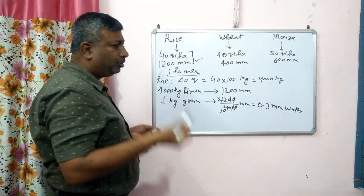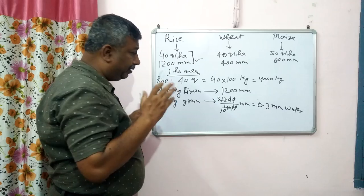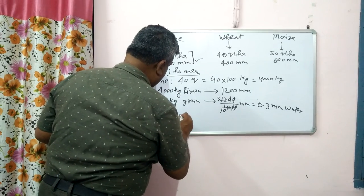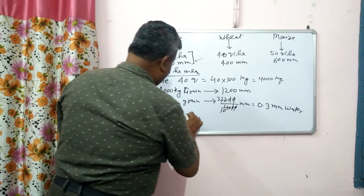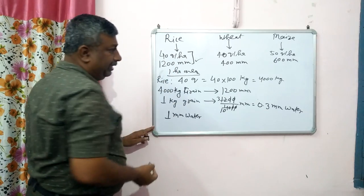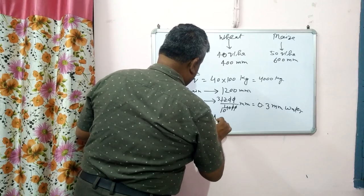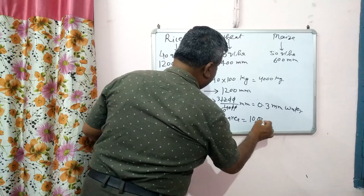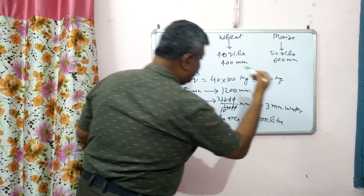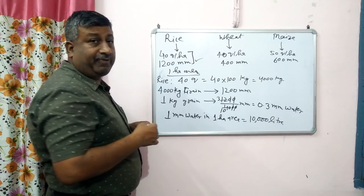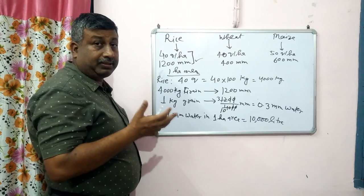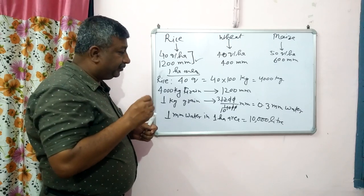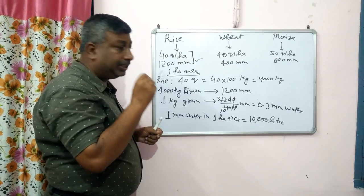So you might think — it is only 0.3 mm of water to produce 1 kg of grain. But 1 mm of water means we are applying 1 mm of water over 1 hectare of area, because we are talking in terms of 1 hectare. And 1 mm of water over 1 hectare area is equal to 10,000 liters.